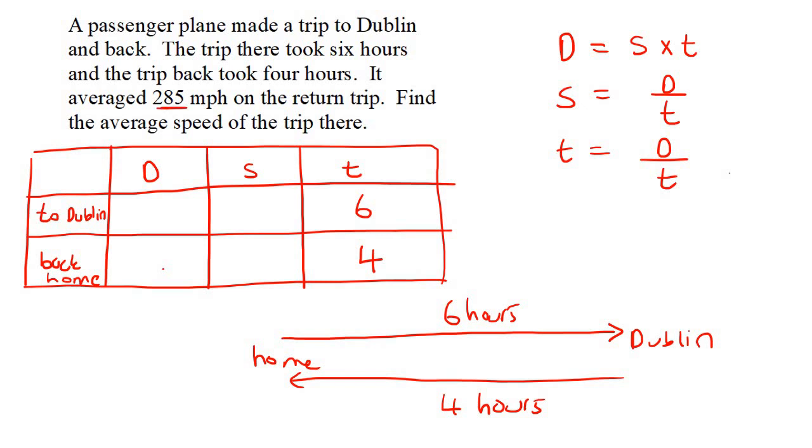It averaged 285 miles per hour on the return. The return is when you're going home, so you might have written the word return over here. So that is the speed. Some learners look at that and they're like, oh, that's the distance, because they see the word miles. But it's miles per hour. That is a speed. So that's going to be 285.